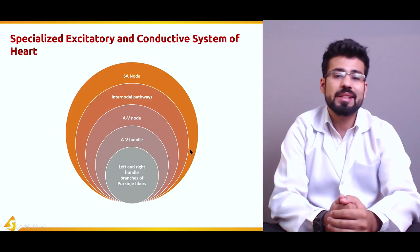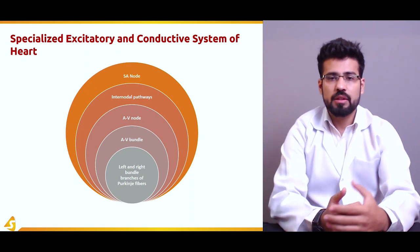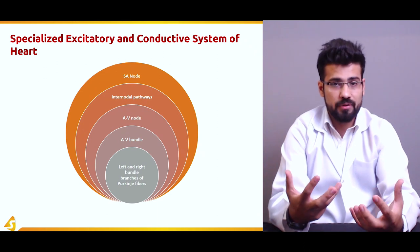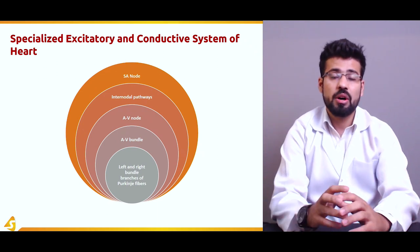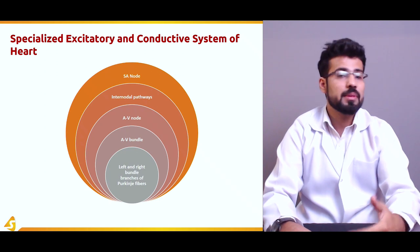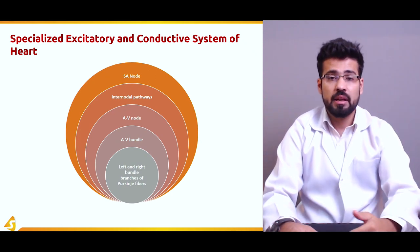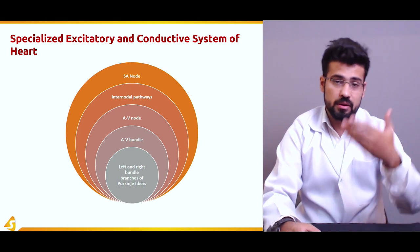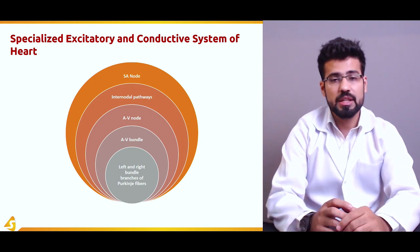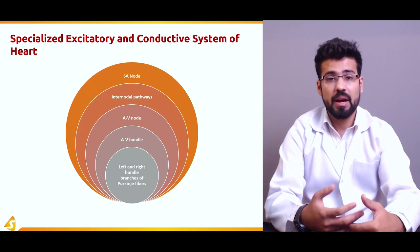We are going to discuss the conductive system of the heart, which is involved in the generation of cardiac impulses. The SA node is where the excitatory process begins — impulses travel from the atria to the ventricles, starting from the sinoatrial node. The SA node carries impulses toward the AV bundle. The internodal pathways transmit impulses from the SA to the AV node; there are three internodal pathways — anterior, middle, and posterior — followed by the AV node.